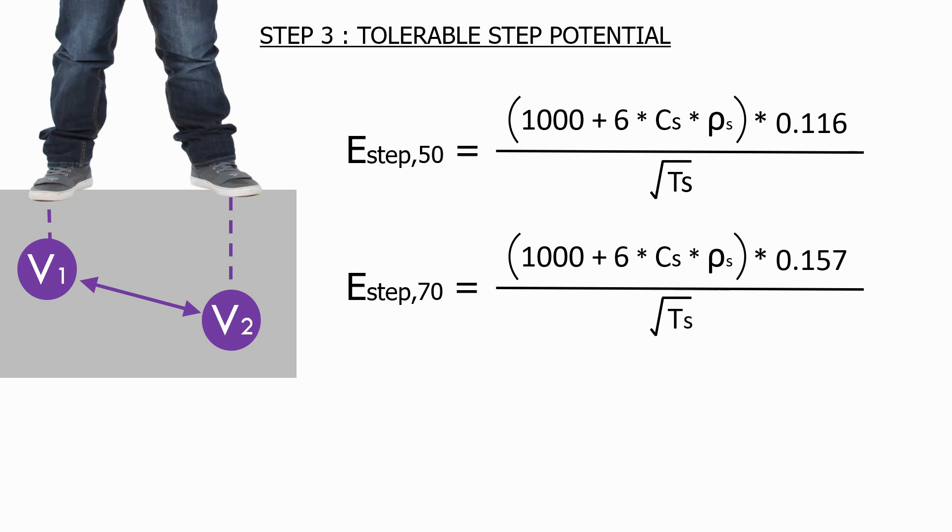As we can see, the only difference between the two equations is the value of the constant, with a person weighing 50 kg able to withstand less voltage than the heavier person.